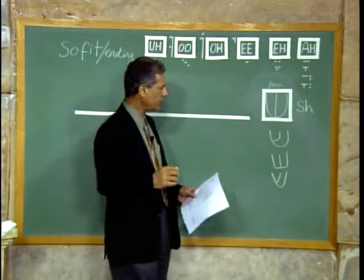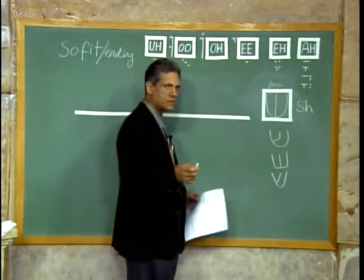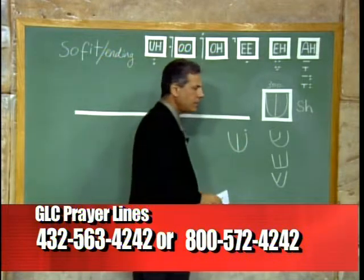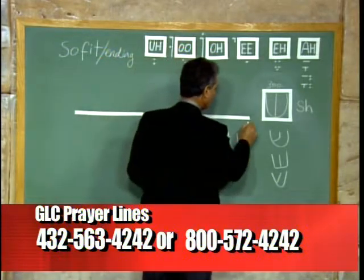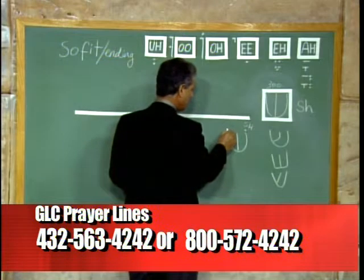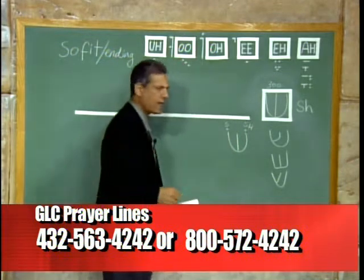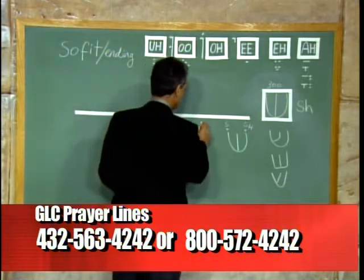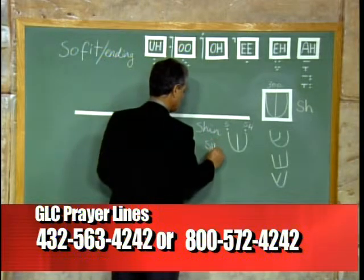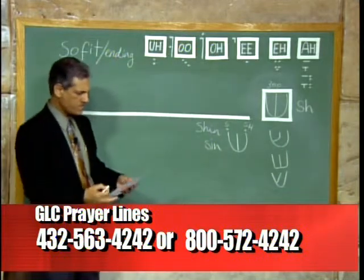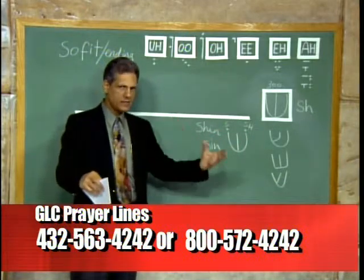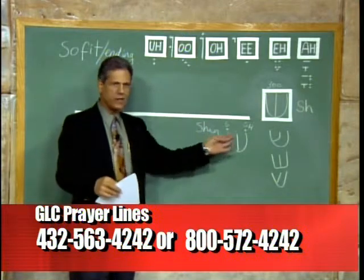The Shin is also interesting because it has two forms. It has a dot on the right side — the dot on the right side produces the SH sound. If the dot is on the left side, it produces just an S sound, and it's called a Sin. So here is Shin versus Sin. It's easy to remember: the right side is the SH sound, the left side is an S sound. You look where the dot is and it will tell you.